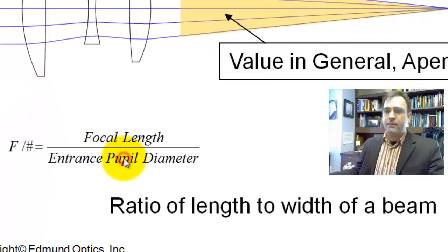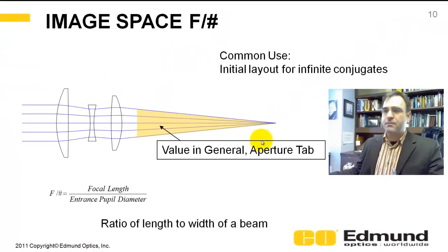Again, F number is your focal length divided by your entrance pupil. Really, it's a ratio of length to width of the beam. So it's a ratio of this length to this width, or that diameter.